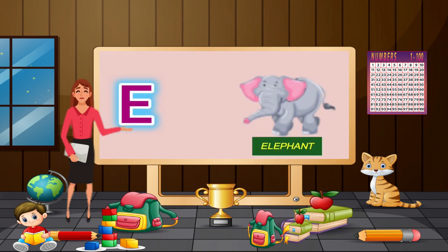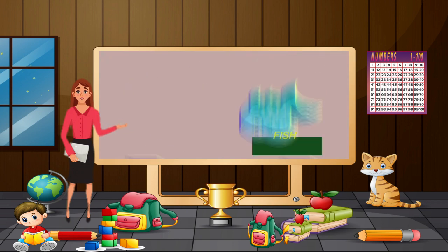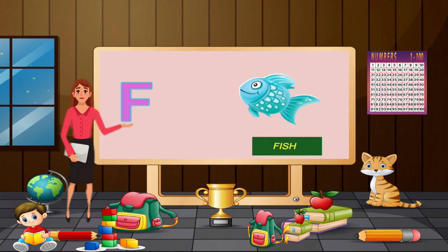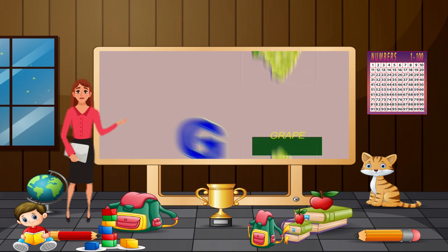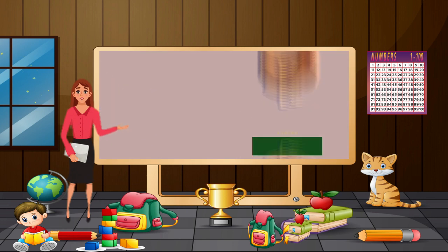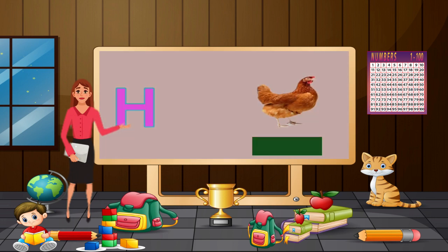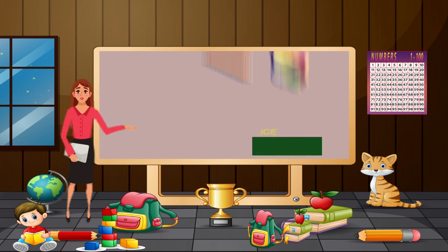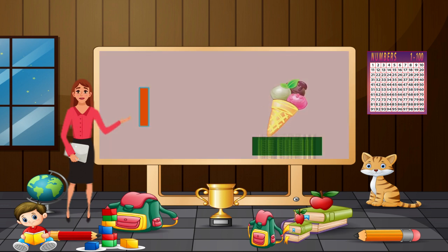E for elephant, F for fish, G for grapes, H for hen.